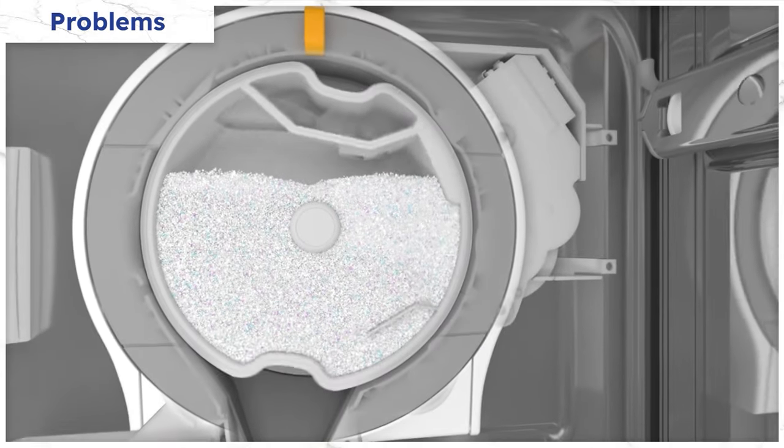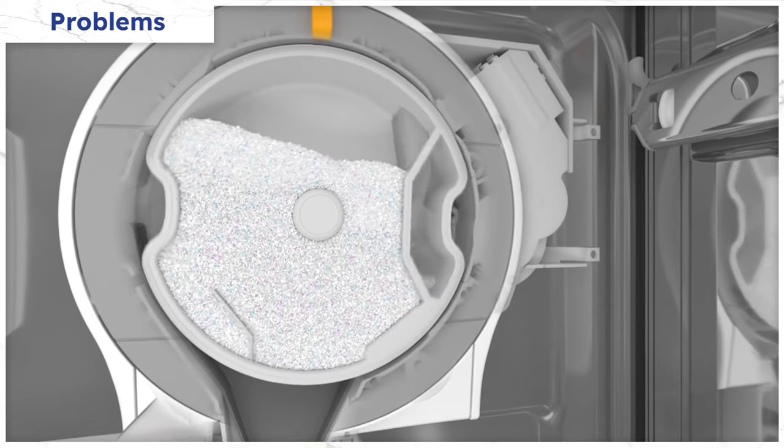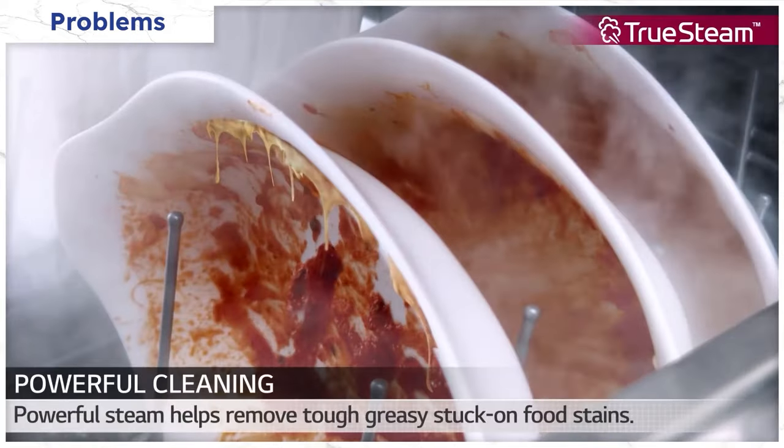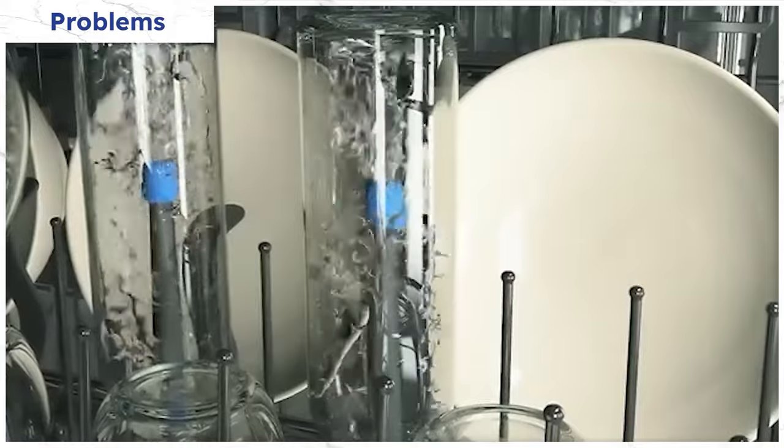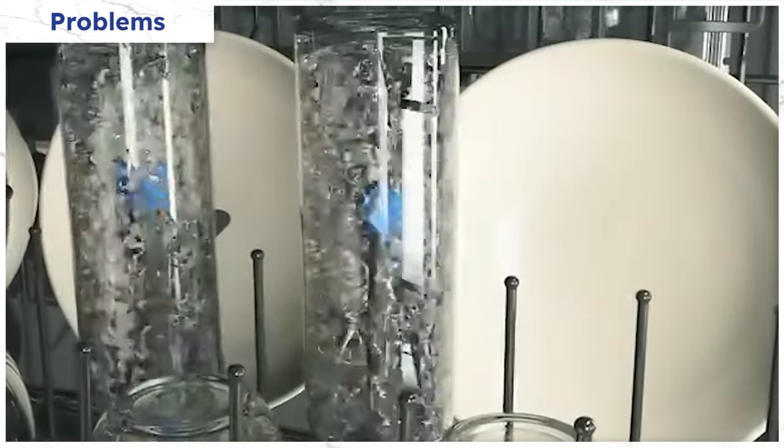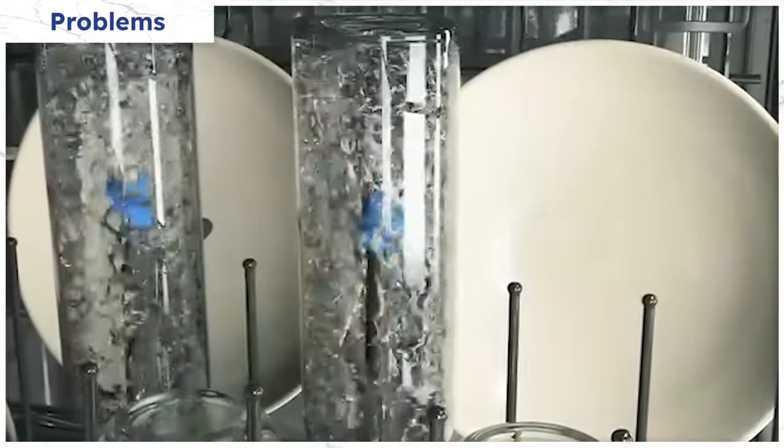What Bosch doesn't have is a detergent spencer like Miele's 20 load auto dose dispenser. It doesn't have steam like LG or the dedicated bottle washes of Beko or GE to wash the gunk out of your taller sports bottles. But does any of that really matter?